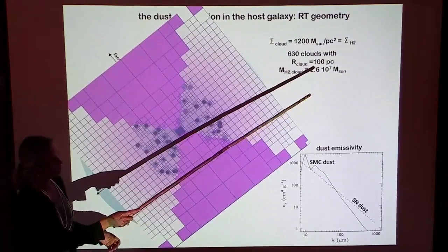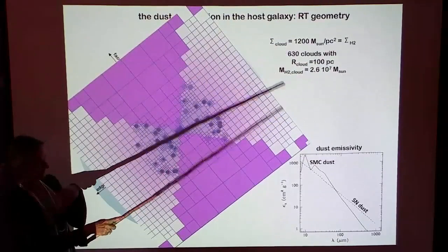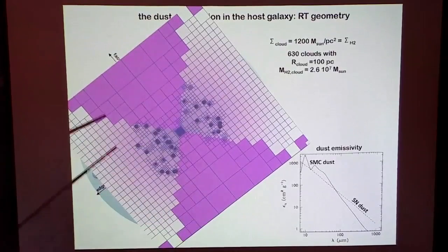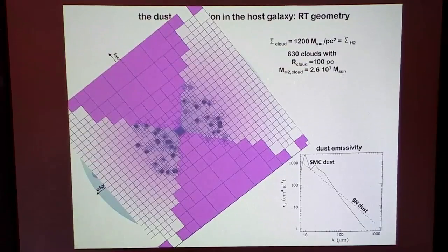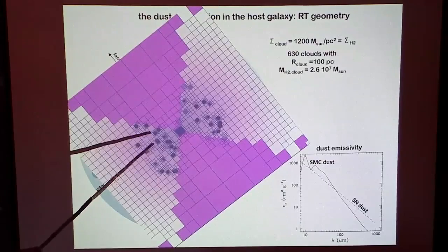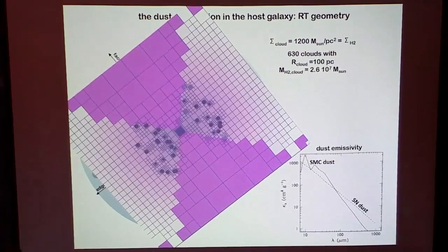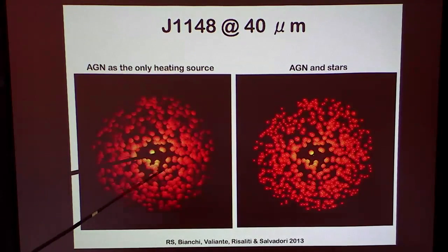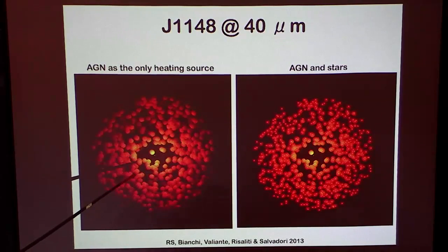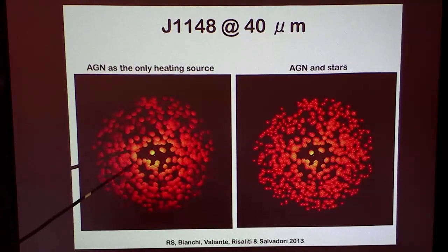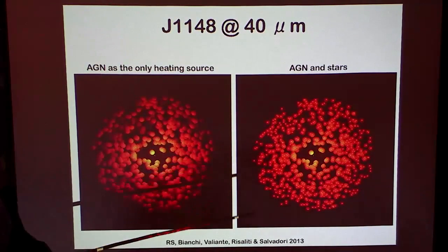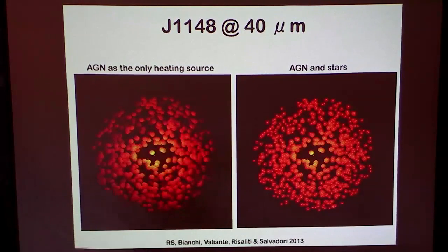We couldn't afford to go to lower values of cloud radius because of resolution problems — going to smaller radii would increase the mass of dust, which is the kind of setup used to explore the radiative transfer. The code is adaptive so we could zoom in on regions. This is an image at 40 microns for two different cases: one where the central source is only the AGN, with stars artificially switched off — you see that the clouds are illuminated only from the center, and since the clouds are very optically thick, only the cloud surfaces are illuminated. When you add the stars in the clouds, all the clouds are illuminated up to much larger distances from the center.